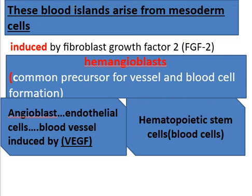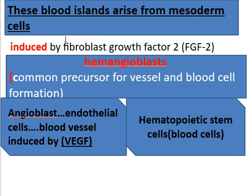Now how will blood vessels and blood cells develop from blood islands in the mesodermal cells? Blood islands arise from mesodermal cells. These blood islands will be induced by fibroblast growth factor 2 to produce hemangioblasts. So the first step is blood islands arise from mesodermal cells, and these blood islands are induced by fibroblast growth factor 2 to form hemangioblasts.